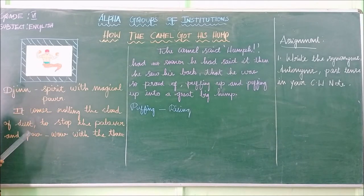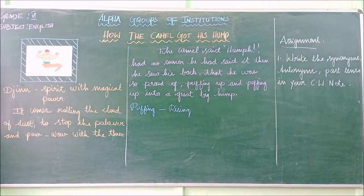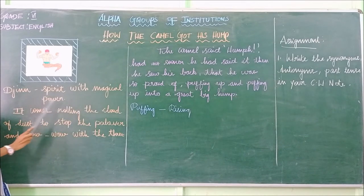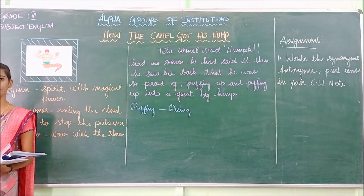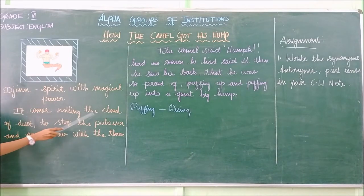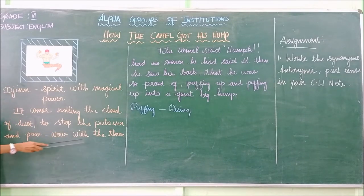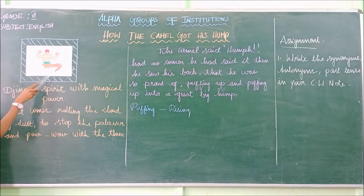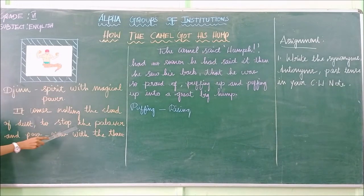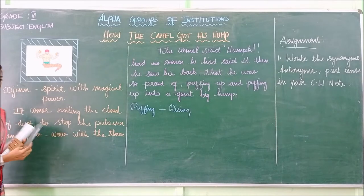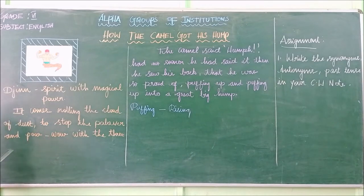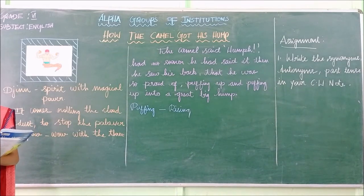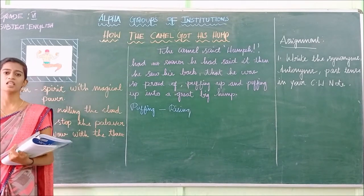What do you see in this picture? This is the picture of a Jinn. It is spelled D-J-I-N-N, pronounced 'Jinn.' The Jinn is the spirit with magical power. It is in charge of all the deserts and has many magical powers. It comes rolling in a cloud of dust to stop the palaver and powwow of the three — the horse, the dog, and the ox.